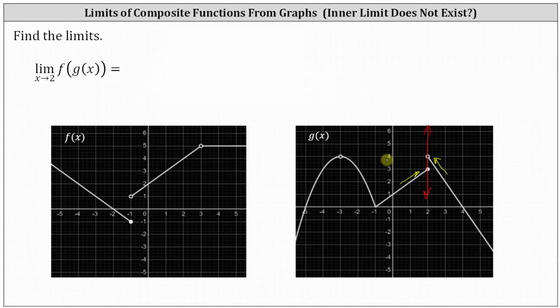But again, this does not necessarily mean the limit as x approaches two of f of g of x also does not exist. What it does tell us is that we need to determine the left and right side limits of the composite function.